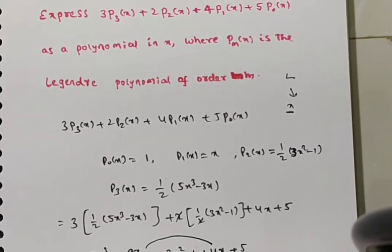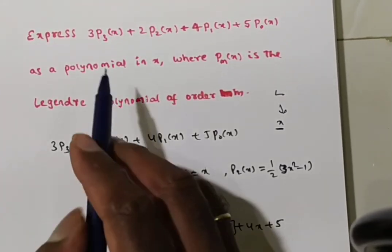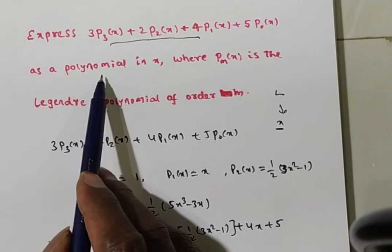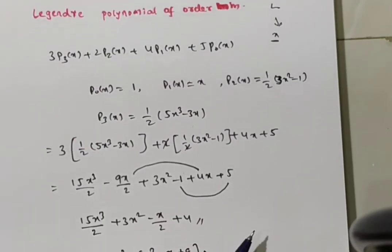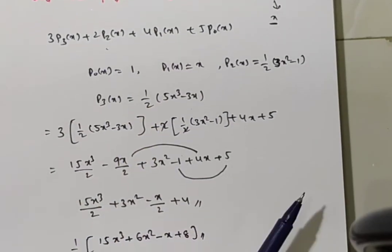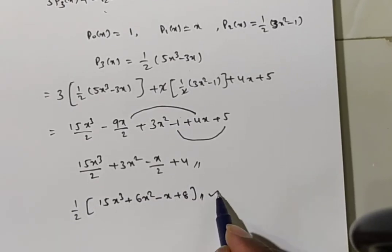So you observe, now what we have done? The given Legendre polynomials, we are expressed in polynomial in terms of x. This is the given Legendre polynomial, now finally we got in terms of x.